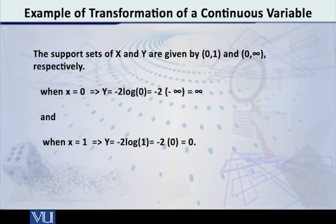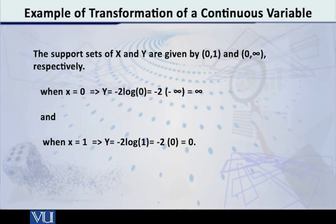We all know that log(0) = -∞. So we get -2 multiplied by -∞. Minus multiplied by minus gives a plus, so we are getting 2 times infinity, which is also infinity. This is what we call the change of limits — when x = 0, y = infinity.